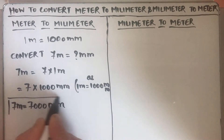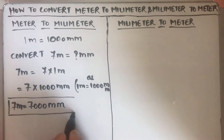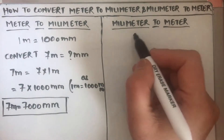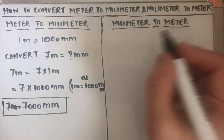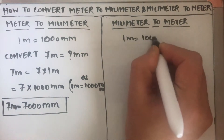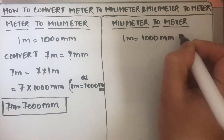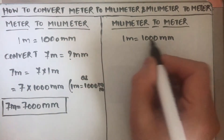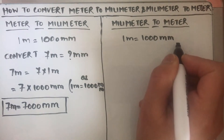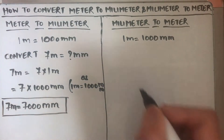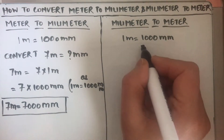So this is the way you can find how many millimeters are there in a meter. For the other part, to convert millimeter to meter, we are going to use the same relation: one meter is equal to thousand millimeters. You just need to remember one relation which is one meter is equal to thousand millimeter. If you know one relation you can convert from millimeter to meter or meter to millimeter.